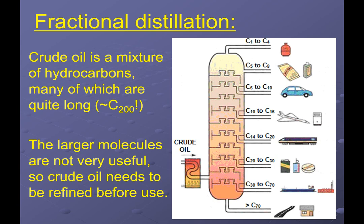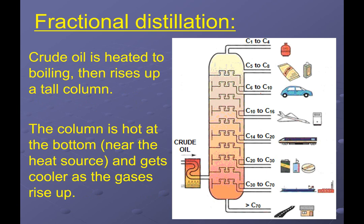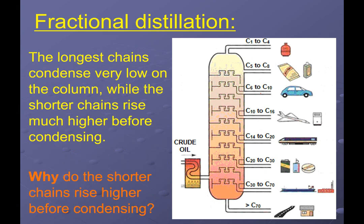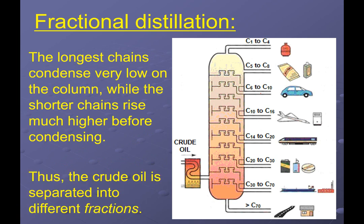The larger molecules are not super useful and typically need to be refined. As we go farther from the heat source, lighter molecules remain as gas and eventually condense at the top parts. The longer chains have the highest boiling points, so they're the first ones to condense, and we've separated them into fractions. Unfortunately, if we just did fractional distillation, we don't get a ton of the C5 to C10 range, which is what we're typically interested in for fuels. So we do some additional chemistry to produce more of those.